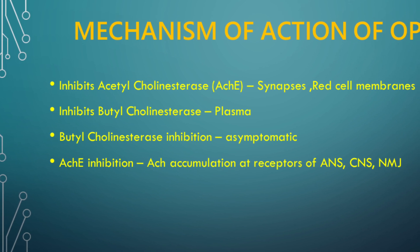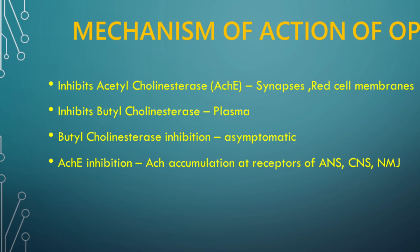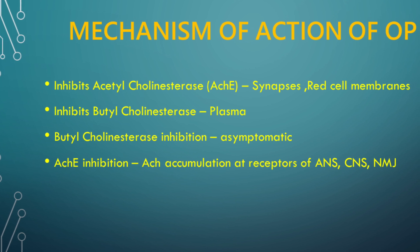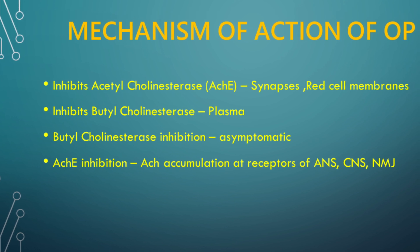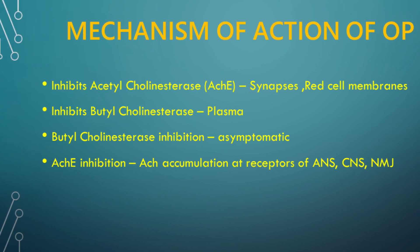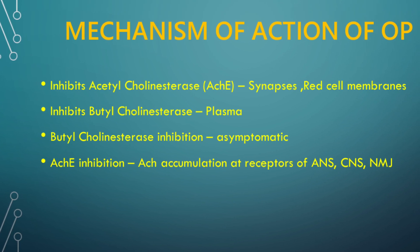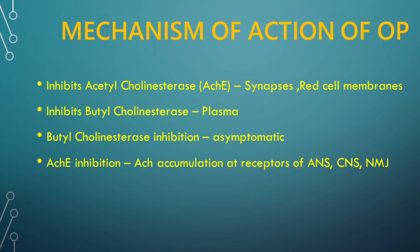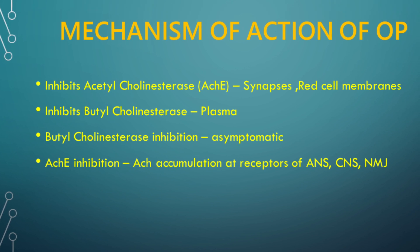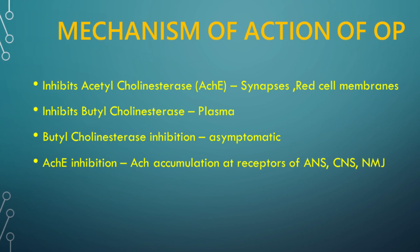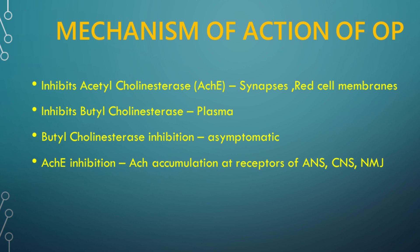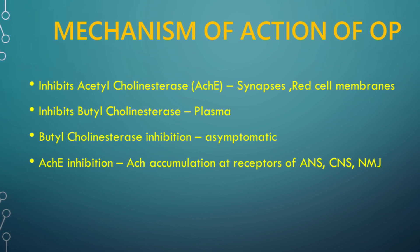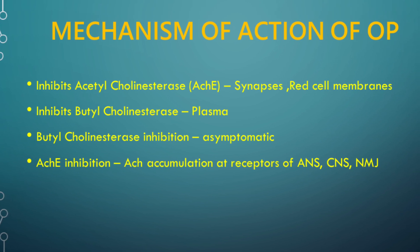Organophosphates, or agricultural insecticides, act by inhibiting acetylcholinesterase — the enzyme responsible for degradation of acetylcholine. Therefore, they exert their toxicity by resultant accumulation of acetylcholine at cholinergic receptors.